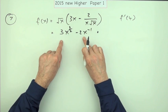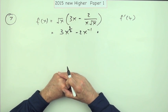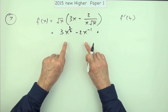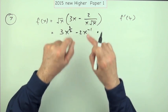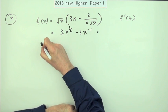And that's the first mark - getting it into a form suitable for differentiation. The variables have to be on top in index form, then differentiate it.